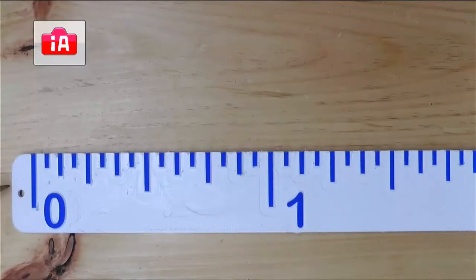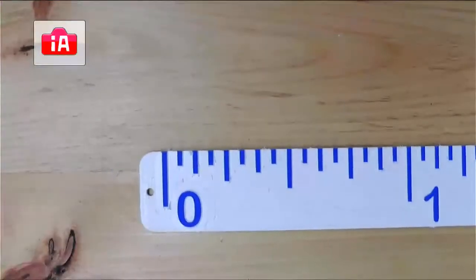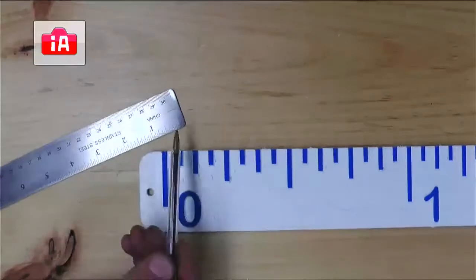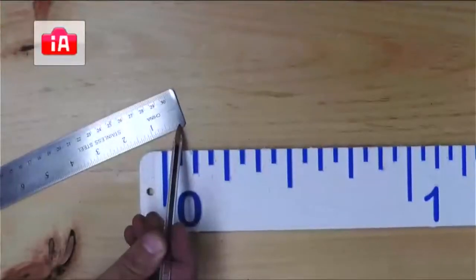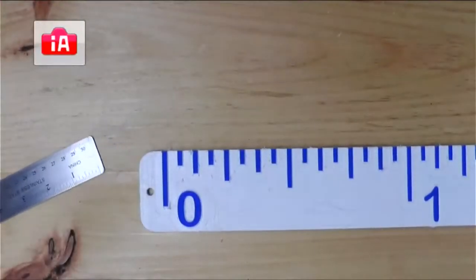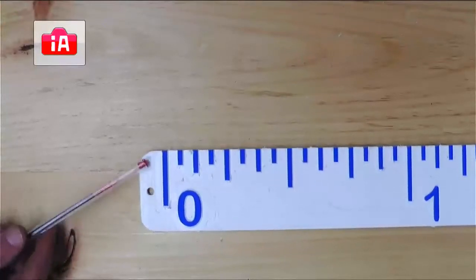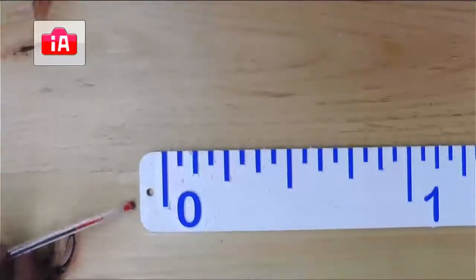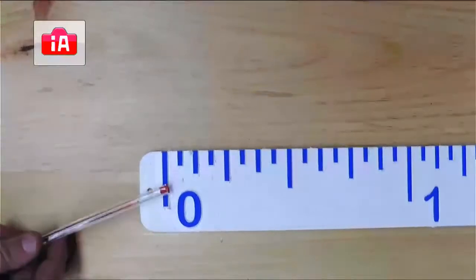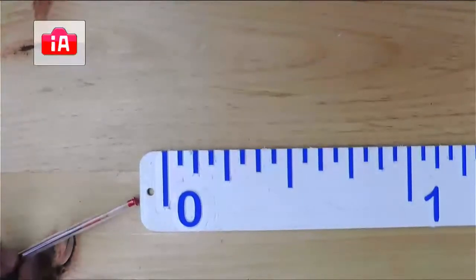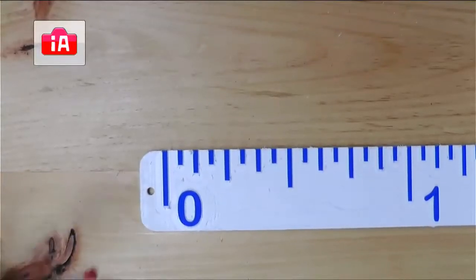The reason that rulers have this little space on the edge here, not all of them have it, a lot of them do, not all of them do. So this one, you can see there's a little gap between the zero and the edge. If I drop this ruler, nothing might happen. But if I drop it 10 times, 20 times, 30 times, eventually this is going to start getting all dented up. As long as the zero line is over here, it's fine. This can get all dented and that's fine. So it keeps your ruler usable longer.